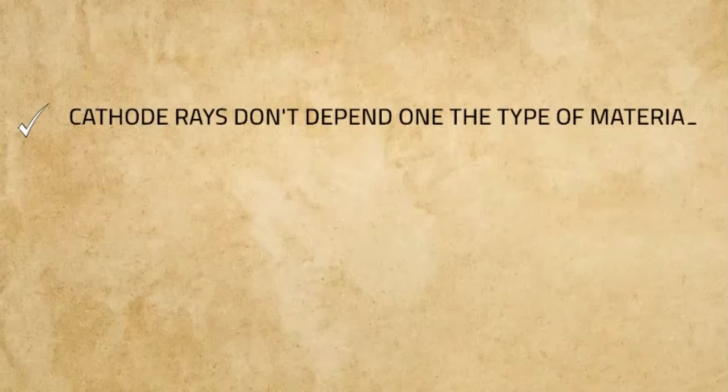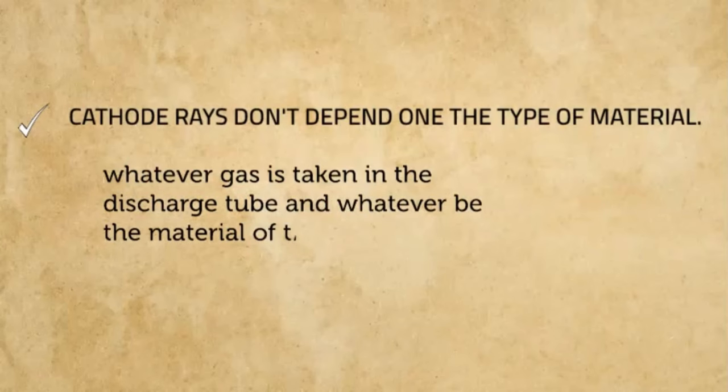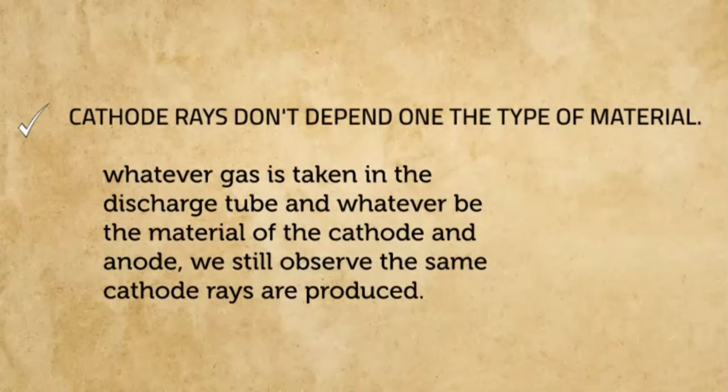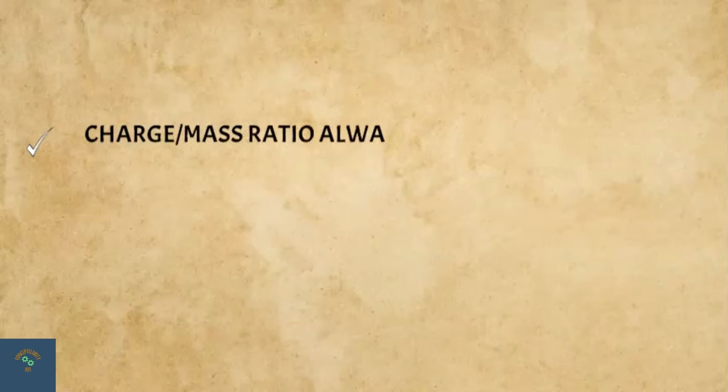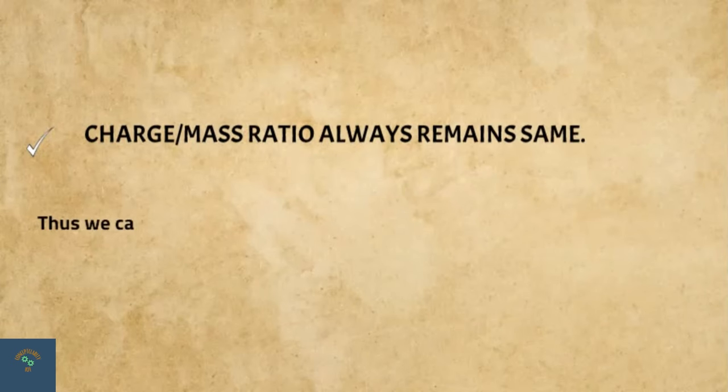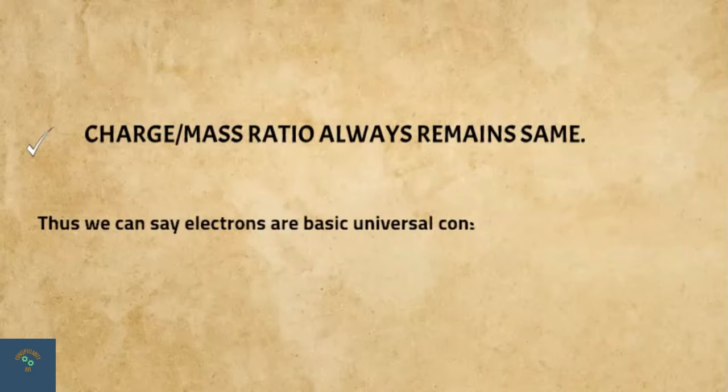If the material of both cathode and anode is changed, we still observe the same cathode rays are produced. Therefore, cathode rays do not depend on the type of material. Thompson proved that the value of charge by mass is always the same. Electrons are thus common universal constituents of all atoms.